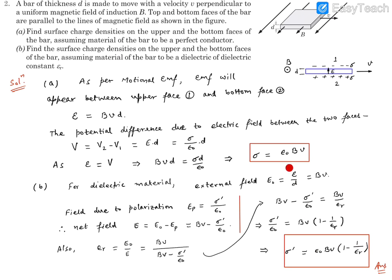This is the charge for a dielectric material. If it's a perfectly conducting material, then εᵣ is infinite, which gives us the previous result. So we have the formula for surface charge density on the two surfaces for dielectric material: σ' = ε₀Bv(1 - 1/εᵣ), and for conductive material: σ = ε₀Bv. These are our final answers. Thank you.